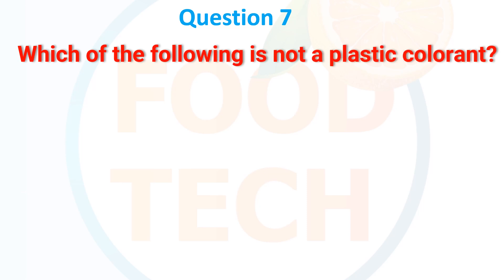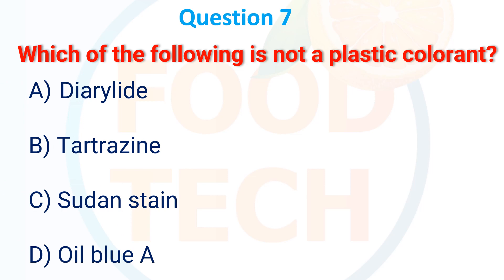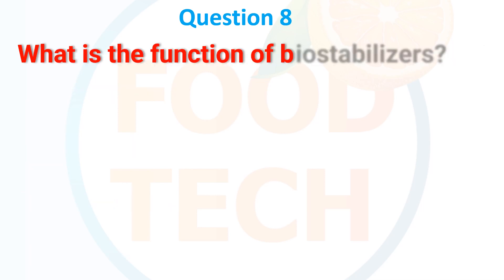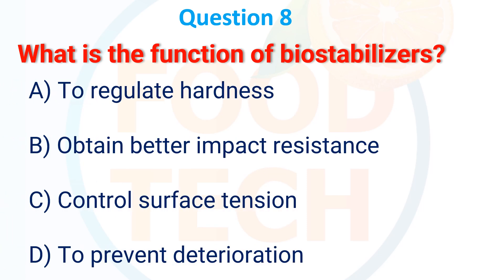Which one of the following is not a plastic colorant? A) Diaryl, B) Tetrazine, C) Sudan Strength, D) Oil Blue A. The answer is B) Tetrazine. What is the function of a bio-stabilizer? A) To regulate hardness, B) Obtain better impact resistance, C) Control surface tension, D) To prevent deterioration. The answer is D) To prevent deterioration.